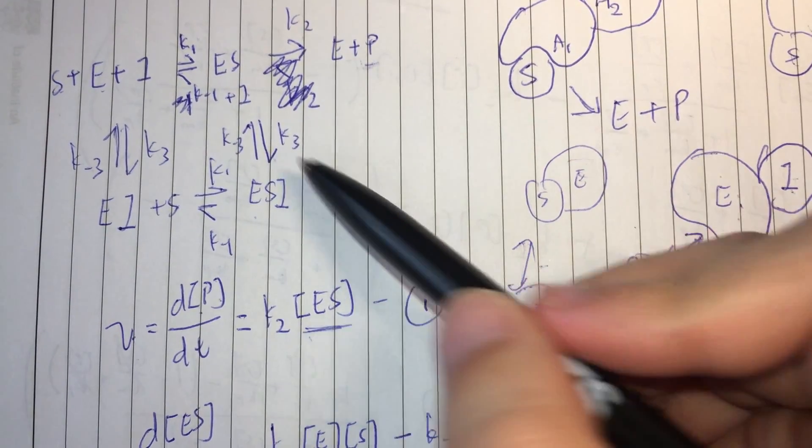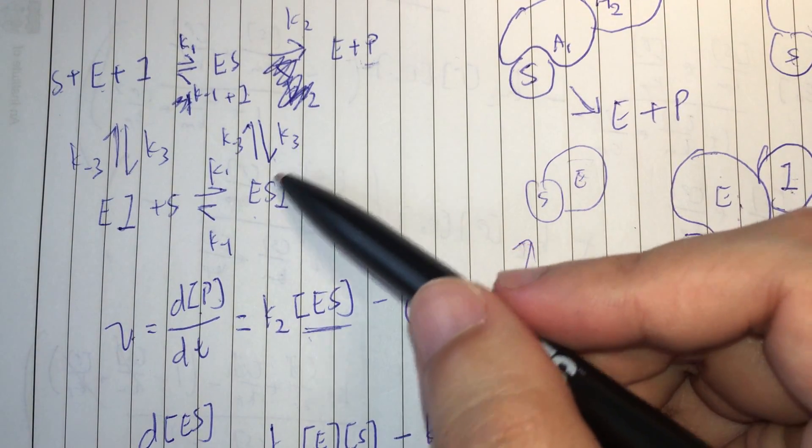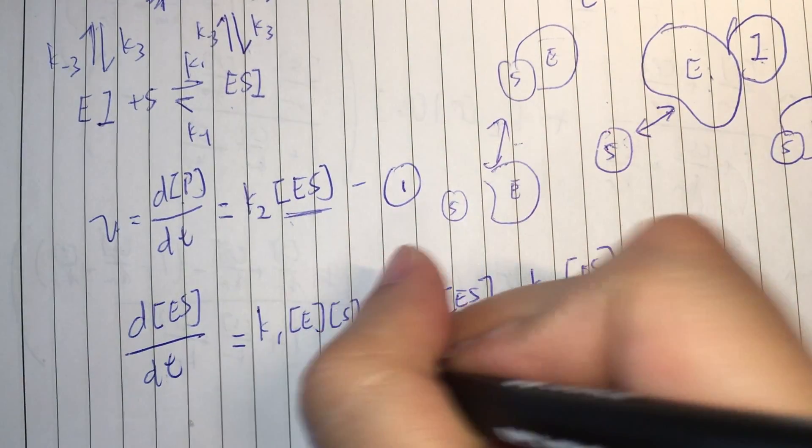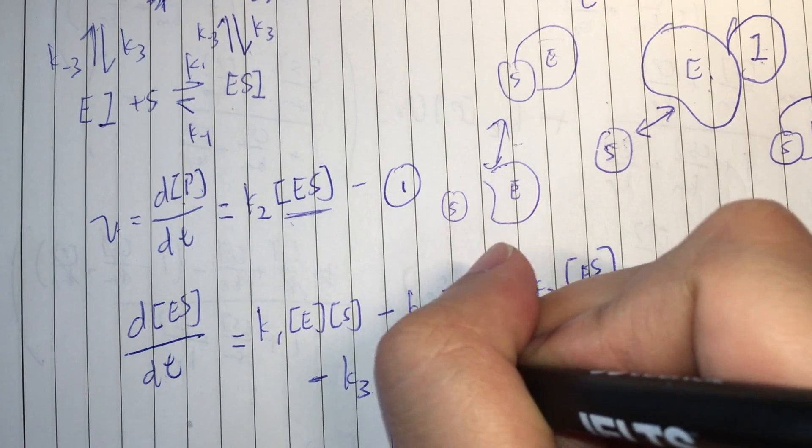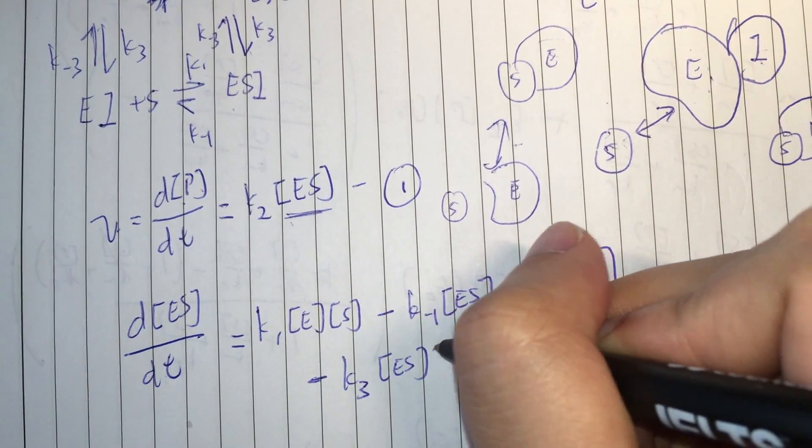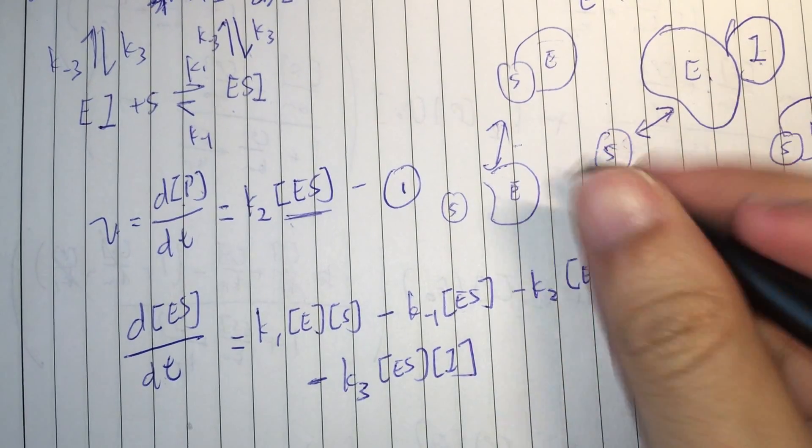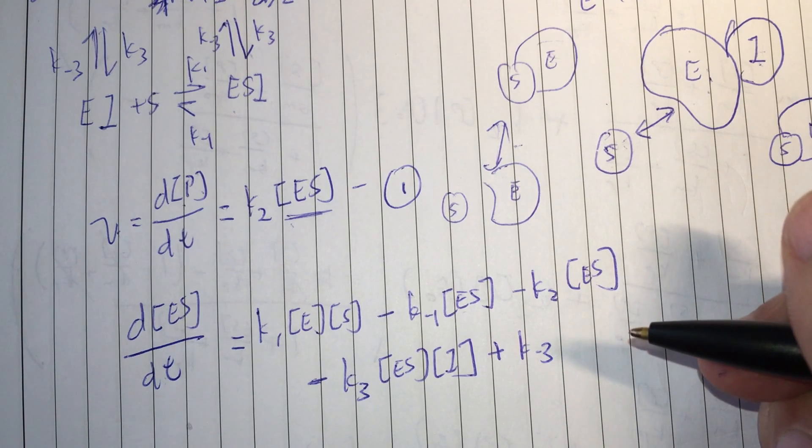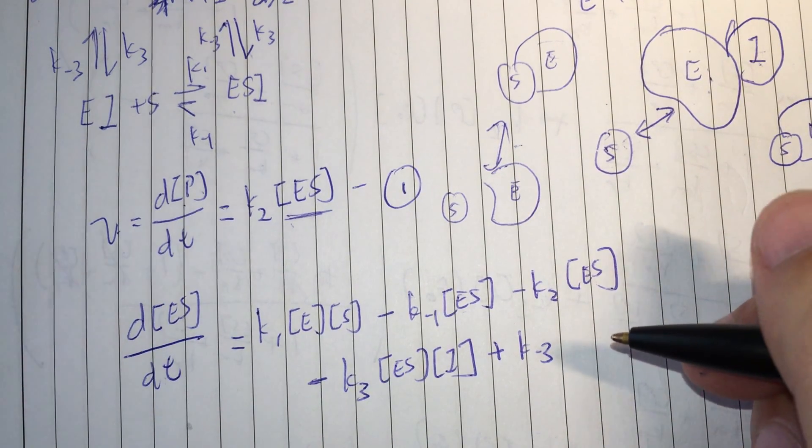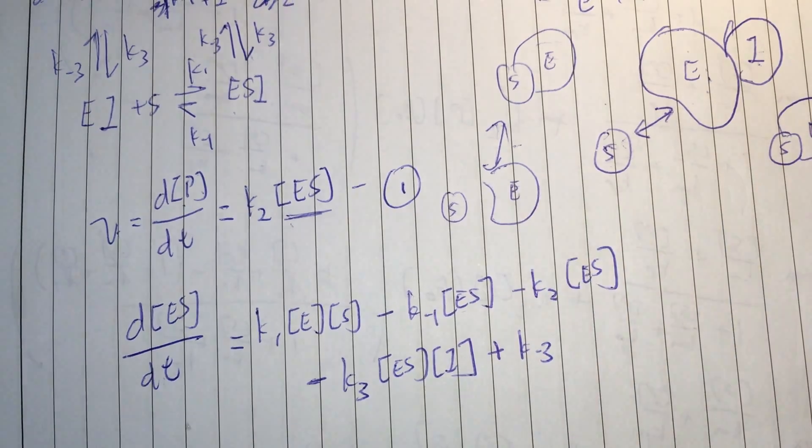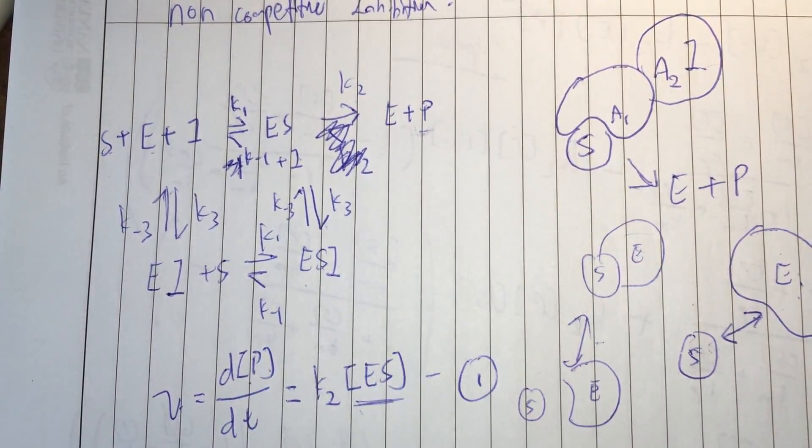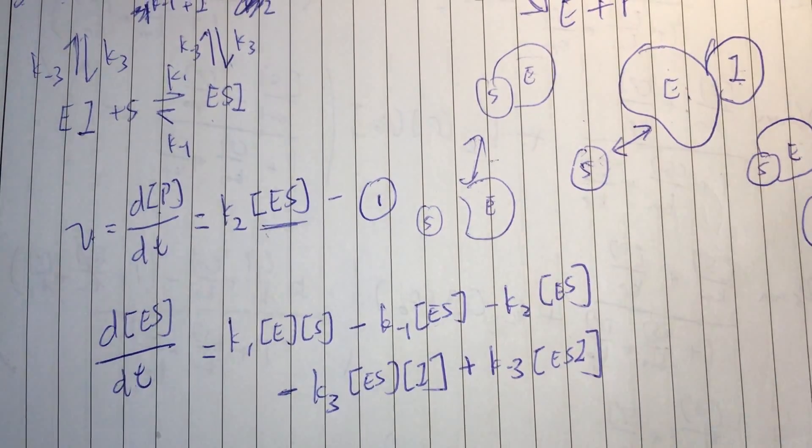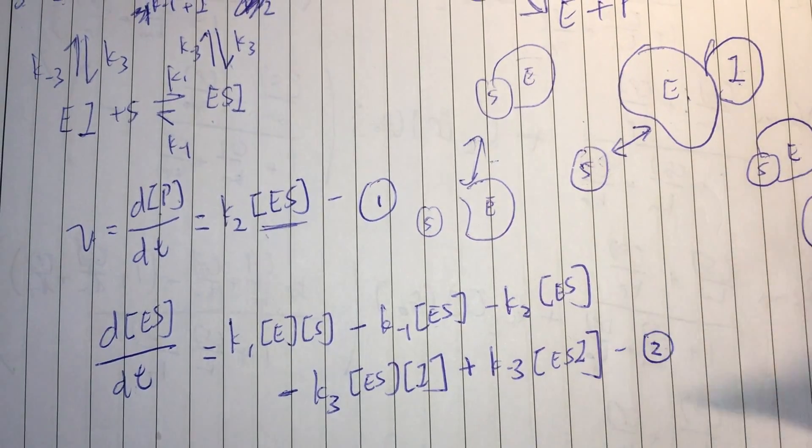Now, let's consider this one. So, K3 into ESI, K minus 3 back to ES. So, let's put minus K3 into ES times the inhibitor I. And you put plus K minus 3. K minus 3 into ESI. So, enzyme substrate inhibitor complex. And that will be our second equation.